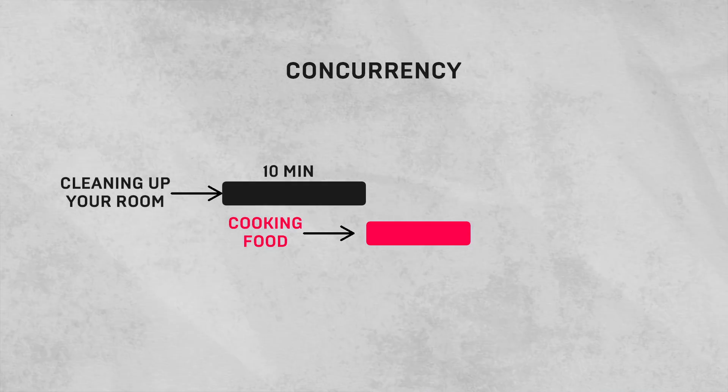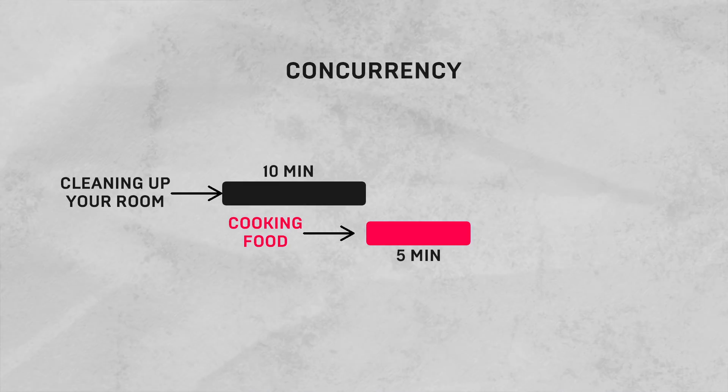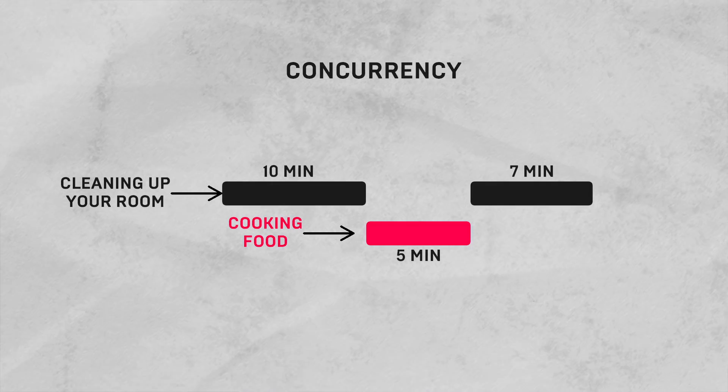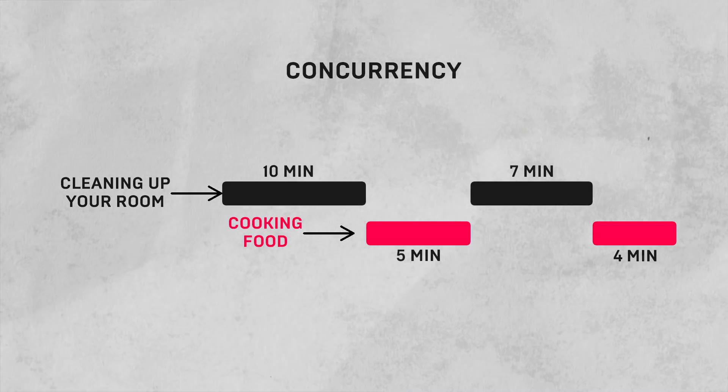Maybe it looks something like this: for the first 10 minutes you clean up the room, then for the next 5 minutes you cook the food—maybe stir a few things, add a few things. Then for the next 7 minutes you clean up the room again, then for the next 4 minutes you cook up the food for some more time, and so on.